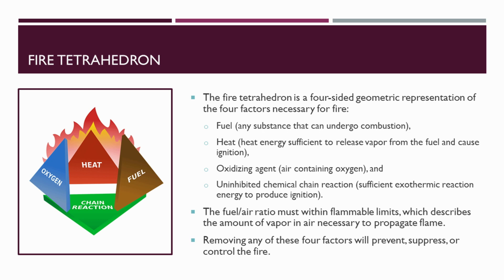The fuel-to-air ratio must be within the flammable limits, which describes the amount of vapor in air necessary to propagate a flame. There are two limits: the upper flammable limit (UFL) and the lower flammable limit (LFL), which will be covered in a later video. Removing any of these four factors will prevent, suppress, or control a fire.